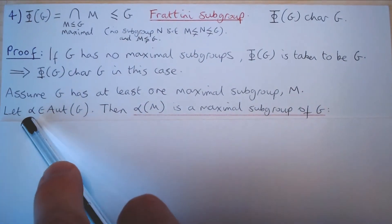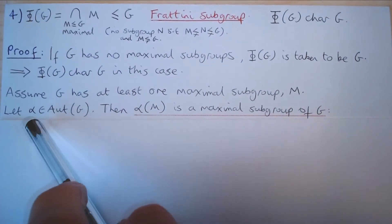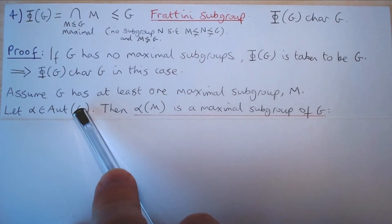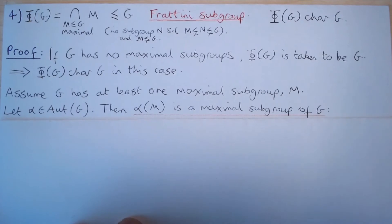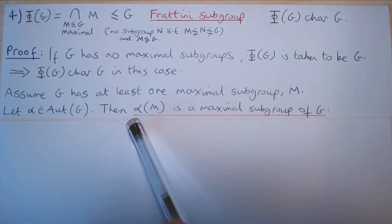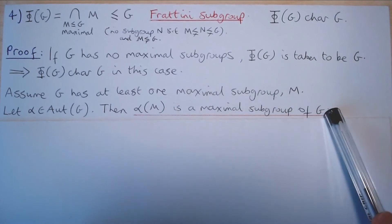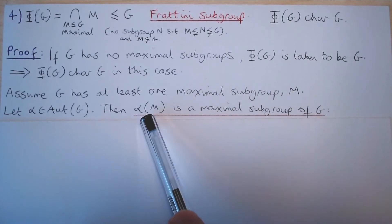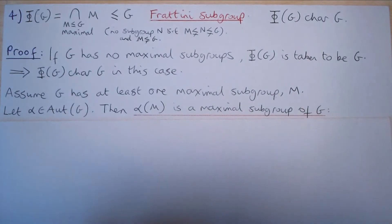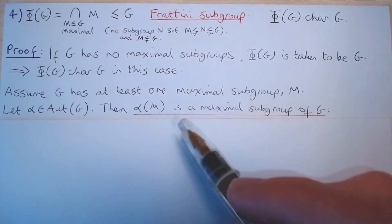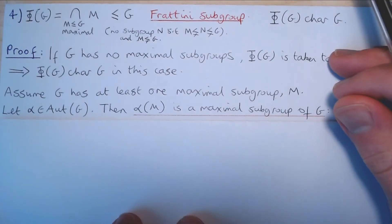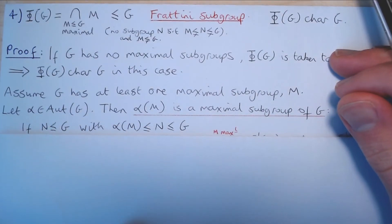Let α be an automorphism of G — that is, an isomorphism of G to itself. We claim that α(M) is also a maximal subgroup of G. First note that α(M) is certainly a subgroup of G, because the image of a subgroup under a group homomorphism yields another subgroup. It remains to show that α(M) is a maximal subgroup of G.